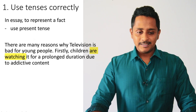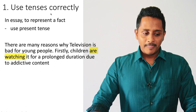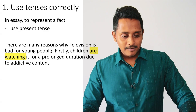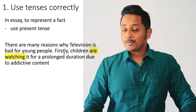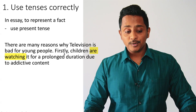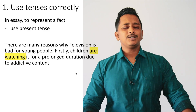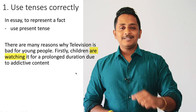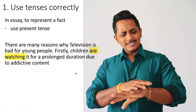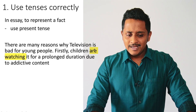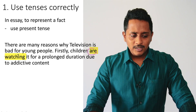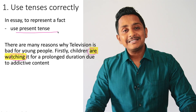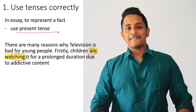Look at this sentence: 'There are many reasons why television is bad for young people. Firstly, children are watching it for a prolonged duration due to addictive content.' Many people don't notice the mistake here — 'are watching' is present continuous tense, not present tense, so avoid using it in essays for stating facts.